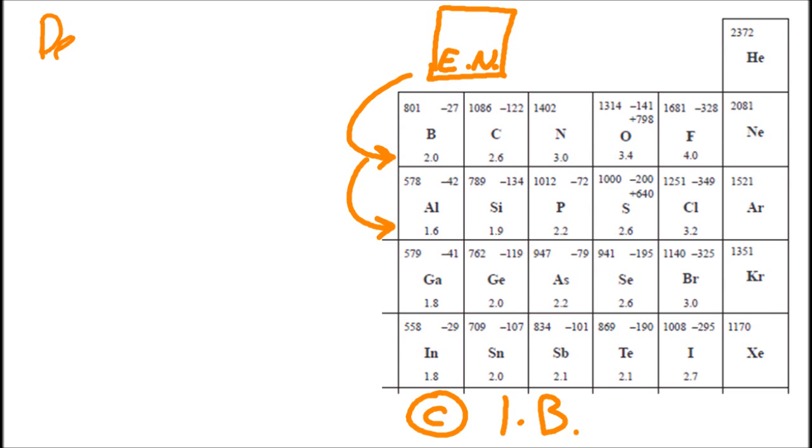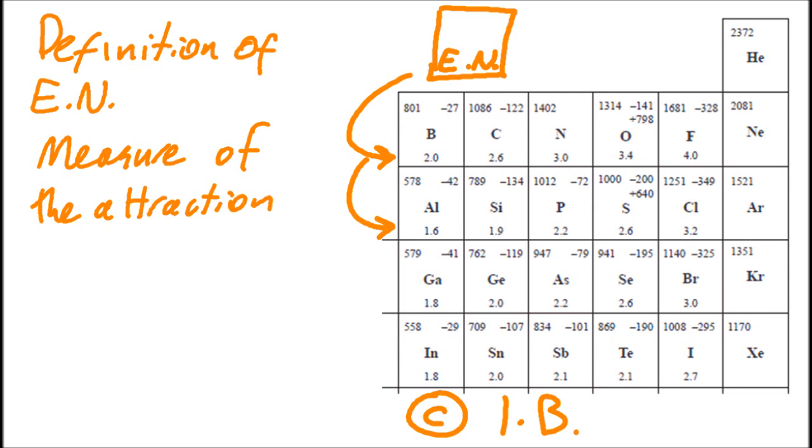See, the electronegativities are the small numbers at the bottom. There's been several definitions of electronegativity in the last few years. No one seems to agree, but this is from one of the textbooks.